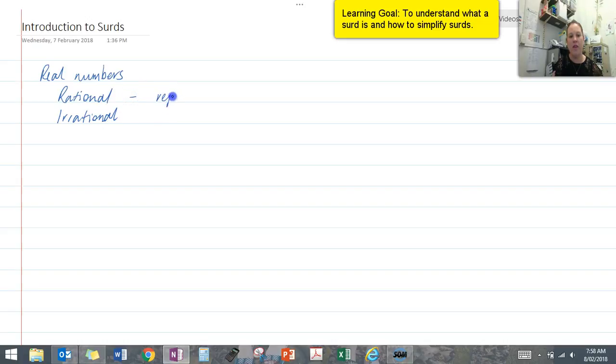Rational numbers are those that can be represented as a fraction or as a terminating decimal.